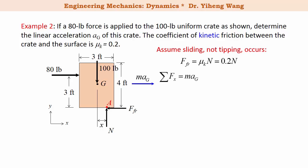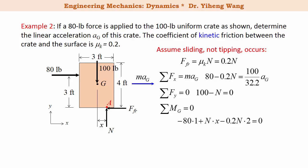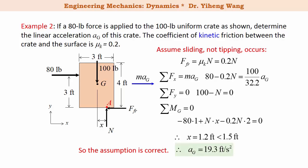We write our three equations of motion: resultant force along x equals maG; resultant force along y equals zero since there is no vertical motion; and since this is translation, the resultant moment about G is also zero. We have enough equations to solve for all unknowns: the frictional force fr, the normal force N, the linear acceleration aG, and the location x. Solving for x first gives x equals 1.2 feet, which is less than 1.5 feet. This confirms our original assumption is correct — sliding occurs and tipping over does not. We can now solve for the linear acceleration as the final answer.